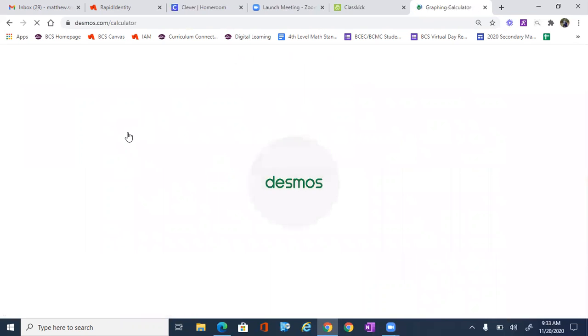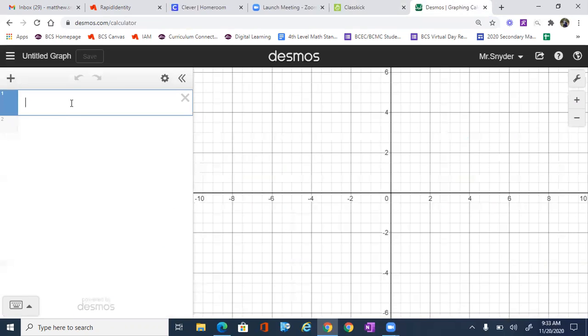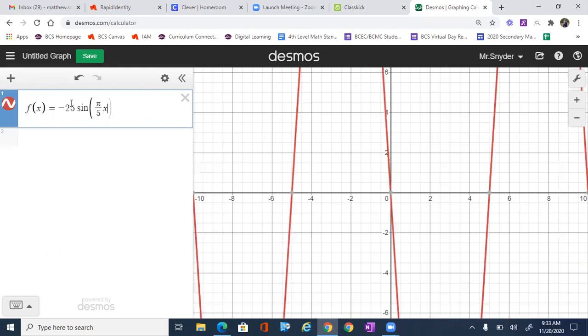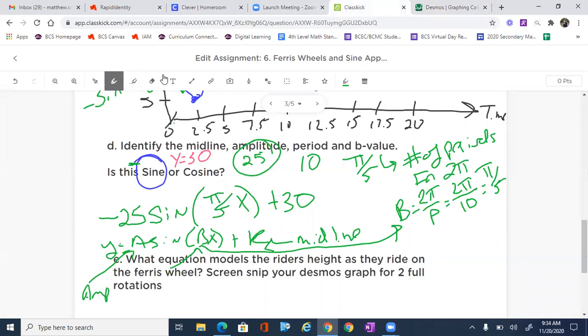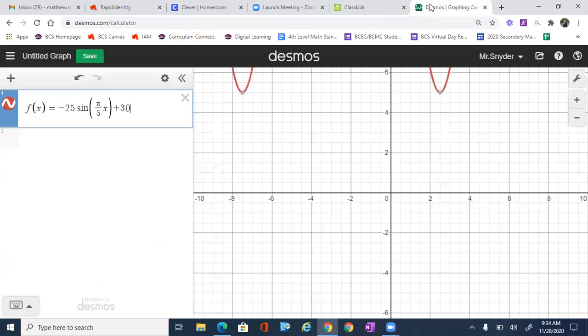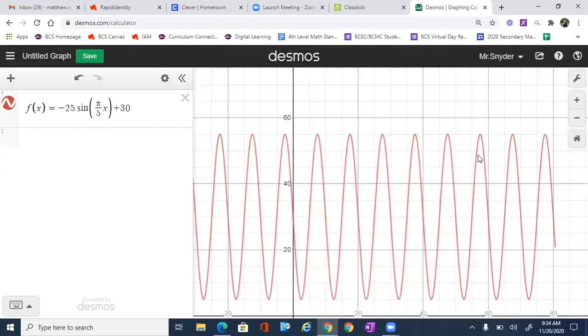So when I go to Desmos, I'm going to plug all that stuff in. So negative 25 sine. I'm going to give it a name f of x equals negative 25 sine pi divided by 5x. And then it was plus 30, which was our midline. So let's just check that out. Negative 25 pi divided by 5x plus 30. There's our midline.